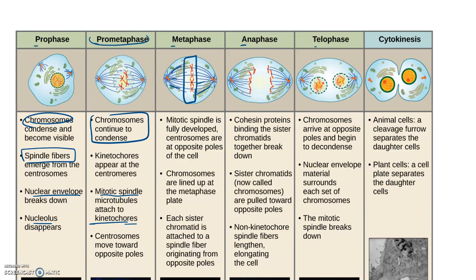In telophase, we see that the chromosomes actually arrive at the opposite ends, and essentially the opposite of prophase and prometaphase begin to occur. So we see that the nuclear envelope begins to reform, the spindle begins to break down, and ultimately that what we've been tracking is the movement of the chromosomes, what's going on in the nucleus.